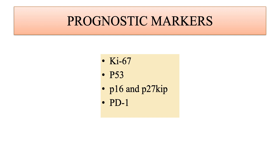Prognostic markers include Ki-67, p53, p16, and PD-L1. Ki-67 is a poor prognostic marker; high Ki-67 is associated with poor prognosis. In high-grade sarcomas of the extremity, a Ki-67 labeling index of more than 20% is an independent predictor of distant metastasis and tumor mortality. p53 overexpression correlates with high tumor grade and worse outcome, but has not been shown to have prognostic significance independent of grade. Loss of p16 expression secondary to homozygous deletion of CDKN2A is present in malignant peripheral nerve sheath tumors but not in neurofibromas.